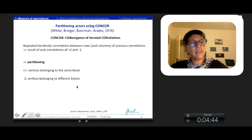Using these correlations, White et al. developed the procedure named CONCOR for conversions of iterated correlations. It is a repeated iterative correlation between rows and columns of previous correlations. Results of only correlations of plus 1 or minus 1 except on some unusual circumstances. And according to these proximities, one can start the partition.